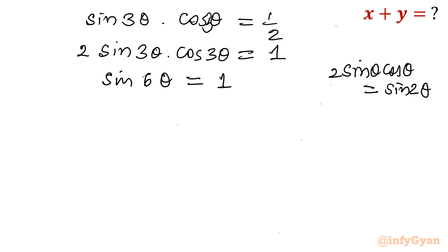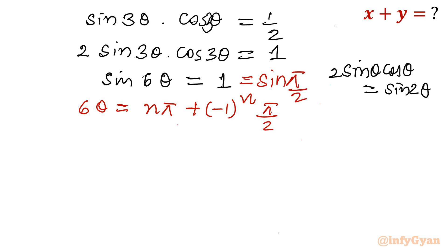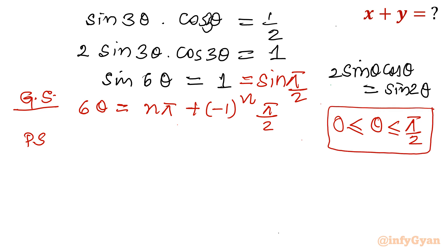Now I will write the general solution for this equation. The general solution is 6-theta equals n-pi plus or minus (negative 1) raised to the power n times alpha, where alpha equals pi over 2, because sin(pi over 2) equals 1. For the principal solution, since sin and cosine should both be positive in the first quadrant, theta lies between 0 and pi over 2. For the principal solution, I consider n equals 0, where n belongs to the integers.